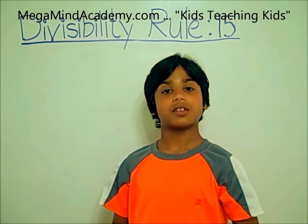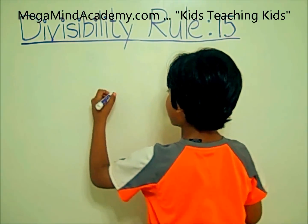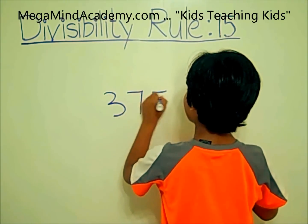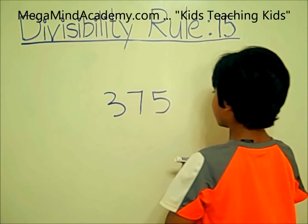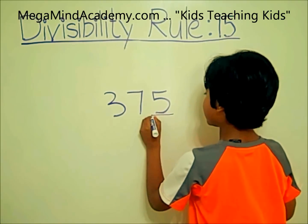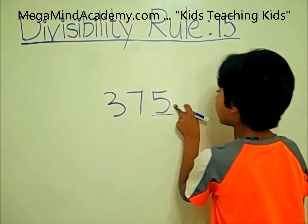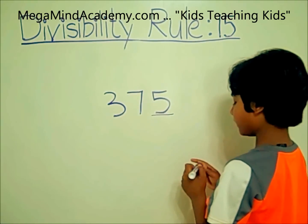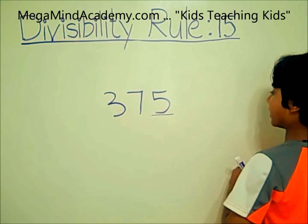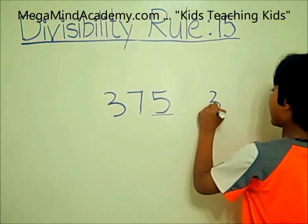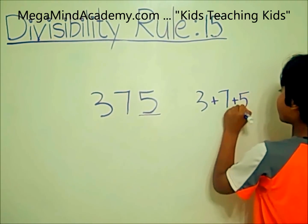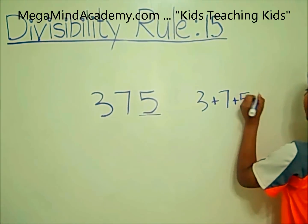Let's look at some examples. Let's say the number is 375. Let's see if 375 is divisible by 5. It is! Because 375 ended with 5. Now let's see if 375 is divisible by 3. That means we have to add up all the digits: 3 plus 7 plus 5. 3 plus 7 plus 5 equals 15.